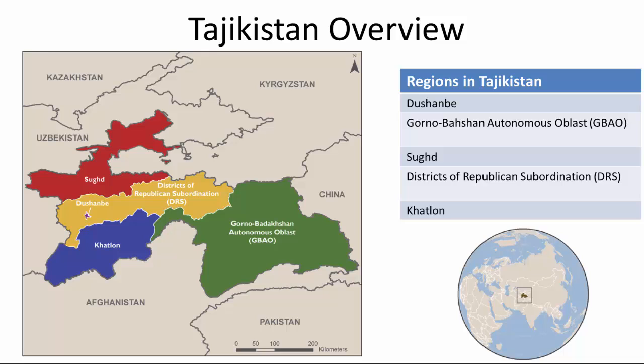Before continuing forward, I want to provide an overview for those not familiar with the Republic of Tajikistan. The Republic of Tajikistan is a small, landlocked country located in the southeastern region of Central Asia. The capital is Dushanbe. The five regions of Tajikistan included in this table are Dushanbe, Gabau, Sugd, DRS, and Hot Lawn.